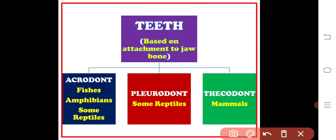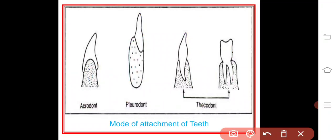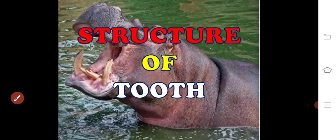The thecodont type of dentition is the fundamental feature of mammals. In this condition the teeth are lodged in bony sockets of the jaw bone, and capillaries and nerve fibers enter through the pulp cavity via the open tips of the hollow roots. Presence of thecodont teeth is the fundamental feature of mammals. In acrodont the attachment is at the tip of the jaw bone, in pleurodont it is at the side, and in thecodont the teeth are arranged in sockets.